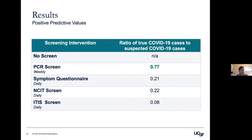PCR screening had the highest positive predictive value of all screening methods, which is advantageous because fewer falsely suspected cases are instructed to work remotely, resulting in lower overall productivity loss. Infrared thermal image scanners have low positive predictive values — among individuals flagged by this tool, only a small number are actually infected. This means a larger number of employees are being asked to isolate who don't have COVID compared to other scenarios.